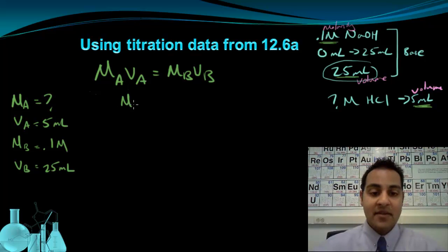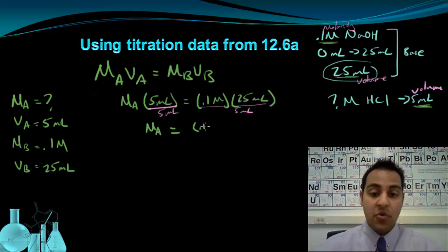I'm going to have Ma, still unknown, times the 5 milliliters of acid equals the 0.1 molar base times the 25 milliliters of base that was used to neutralize. I can now solve for Ma by dividing both sides by 5 milliliters. So that's going to give me 0.1 times 25 divided by 5. And when we carry out that arithmetic, we'll see that this equals 0.5. And I'm solving for molarity, so this is 0.5 molar.